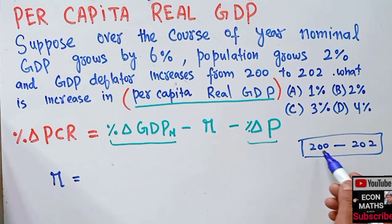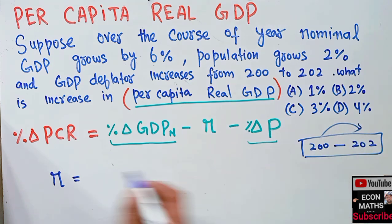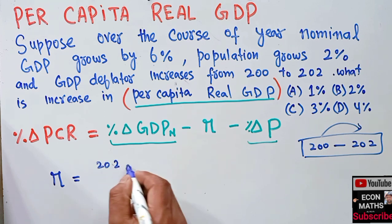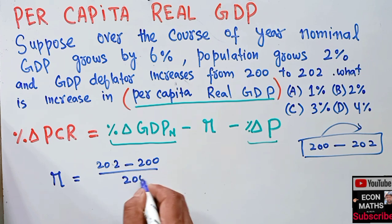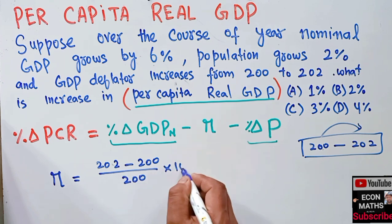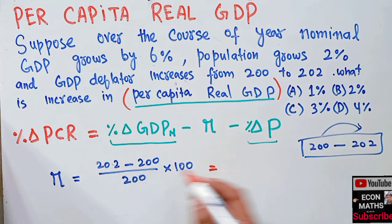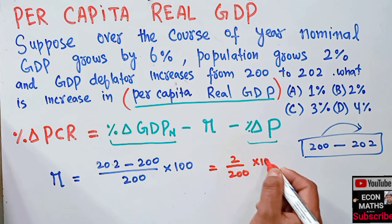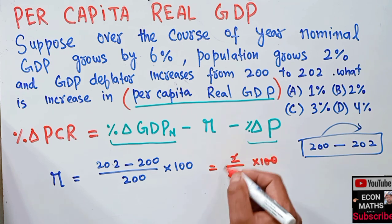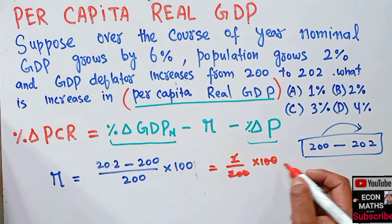Since the GDP deflator increases from 200 to 202, the percentage change equals the final value (202) minus the initial value (200), divided by the initial value (200), multiplied by 100. So that is 2 divided by 200 times 100, which equals 1%.